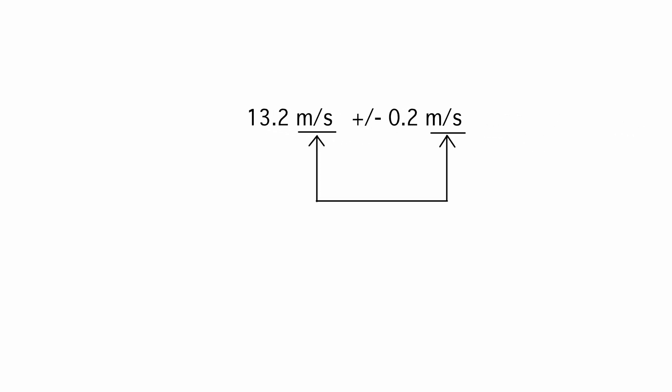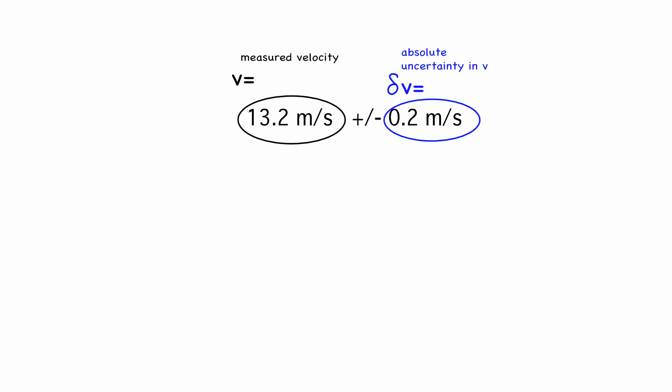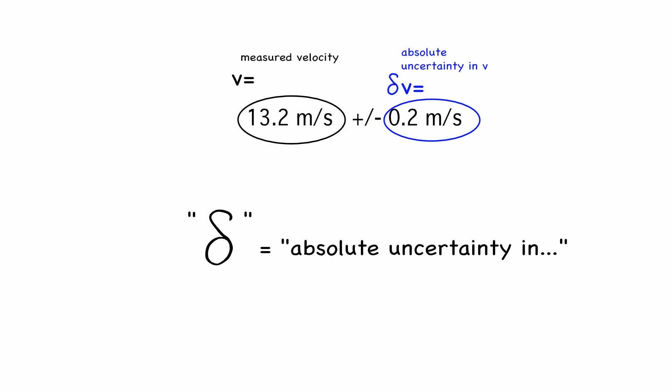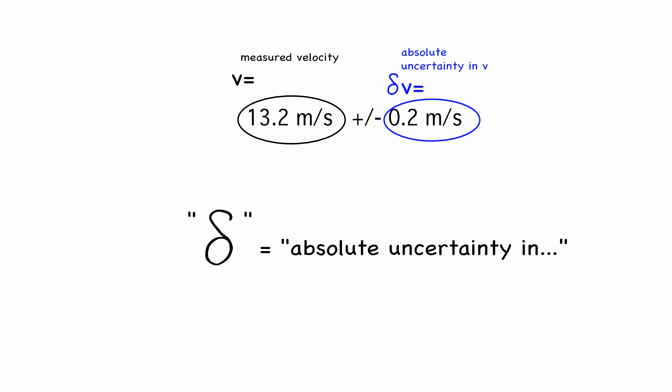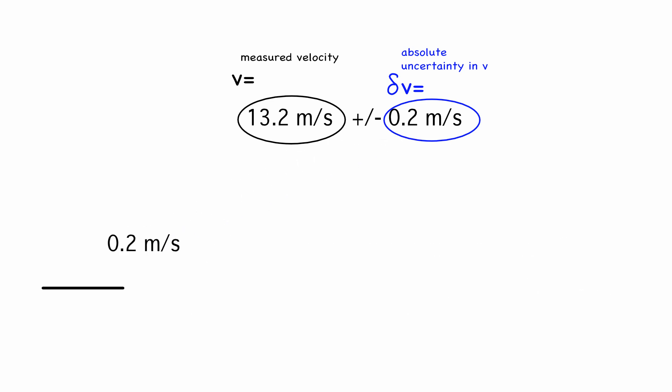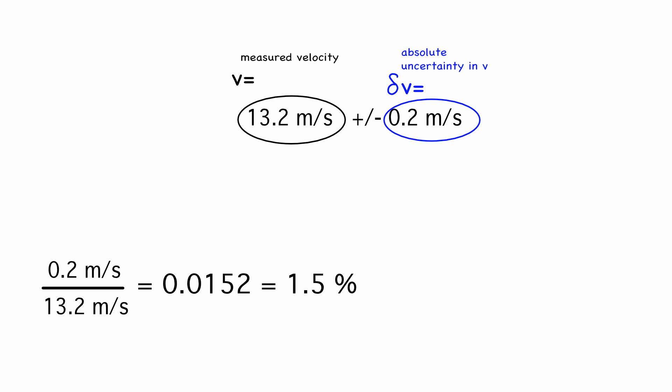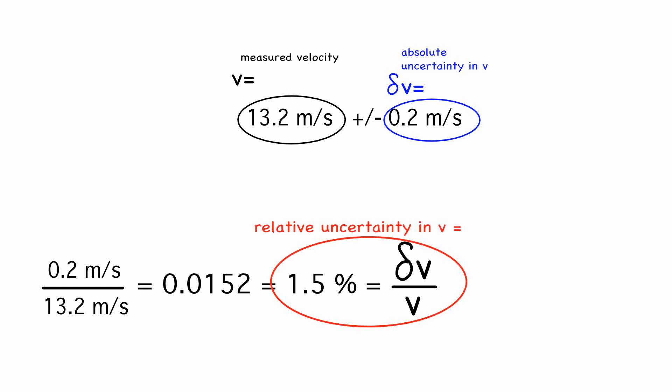If you specify the plus-or-minus value in the same units as the thing you're measuring, it's called an absolute uncertainty, and we use the symbol lowercase Greek letter delta to write it mathematically. An alternative way of expressing an uncertainty is as a percentage or fraction of the thing you measured — that is, delta-something over the something. This is called the relative uncertainty.